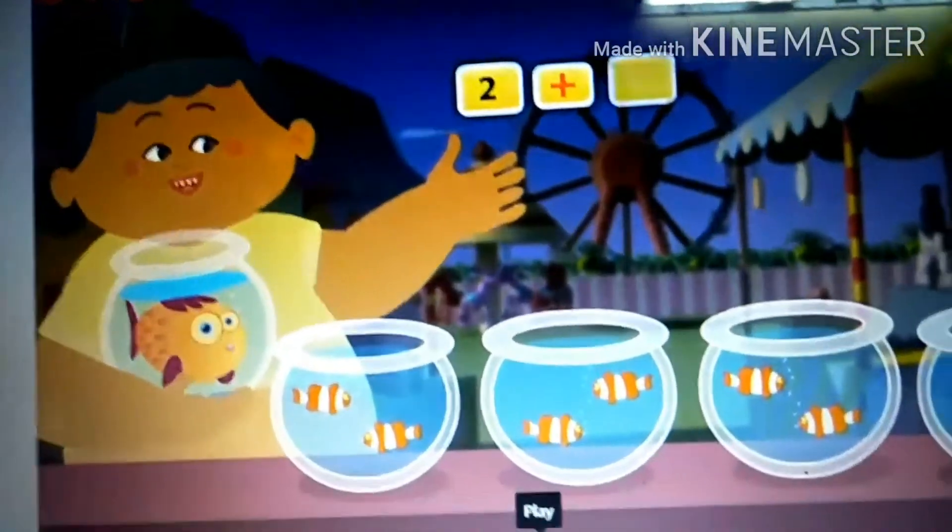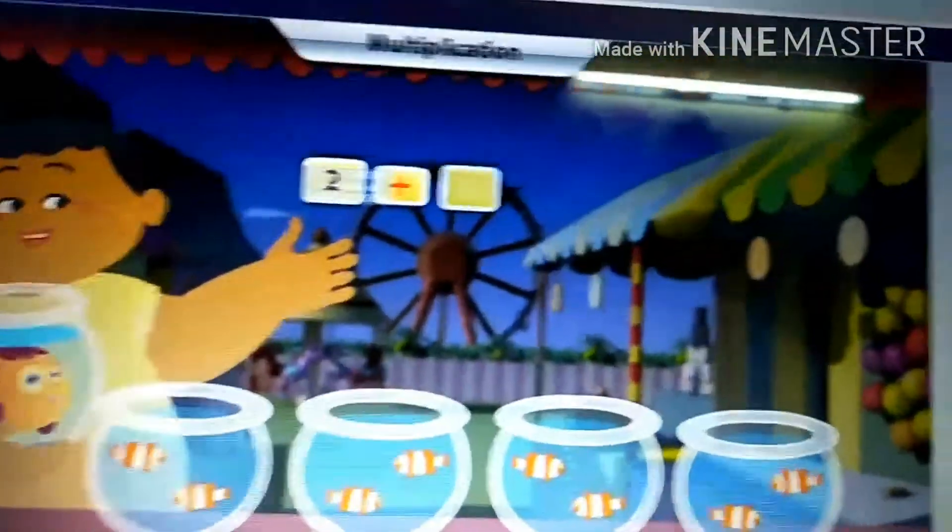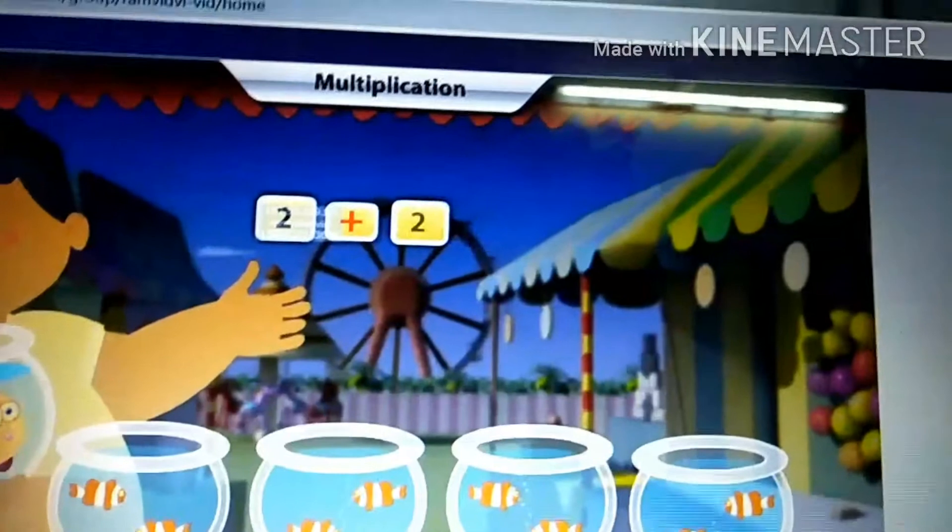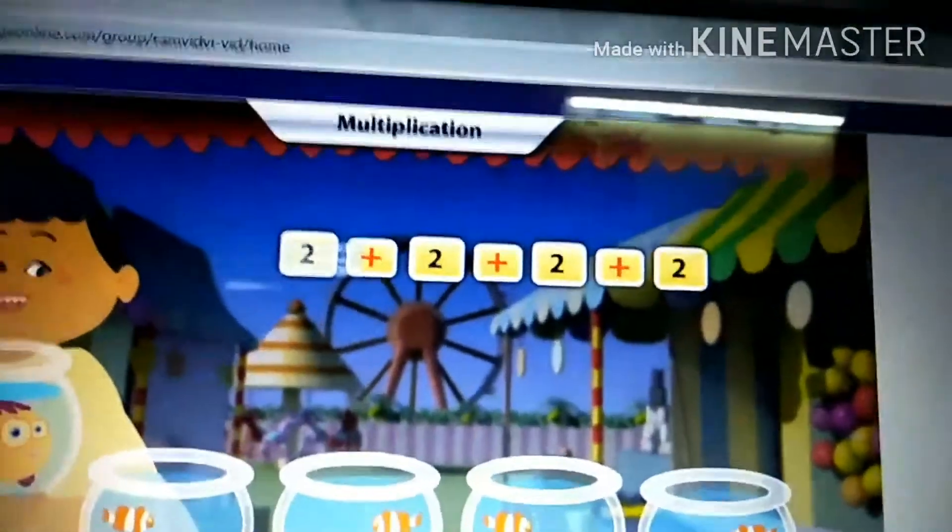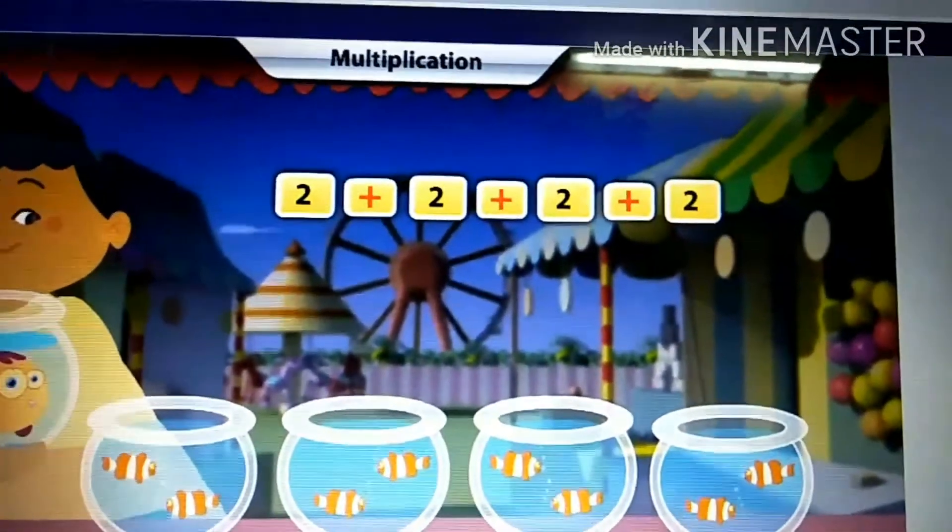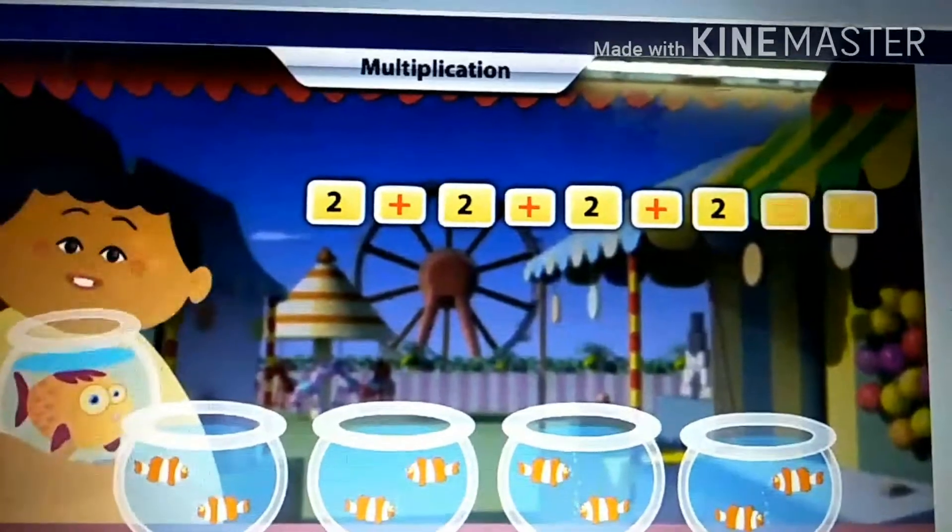Let me see how many there are in all. There are two fish in each bowl, and there are four bowls. That means if we add two four times, we will get the total number of clownfish.